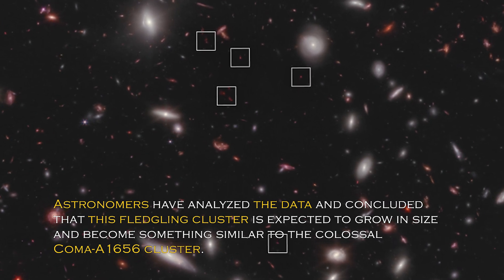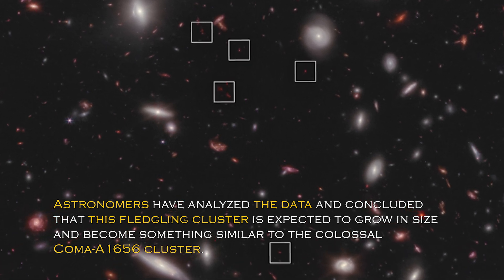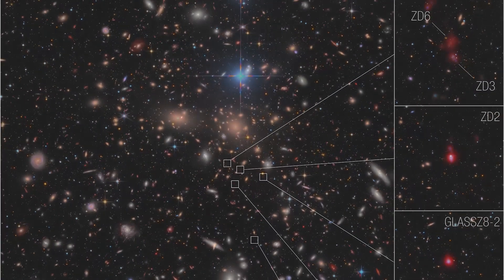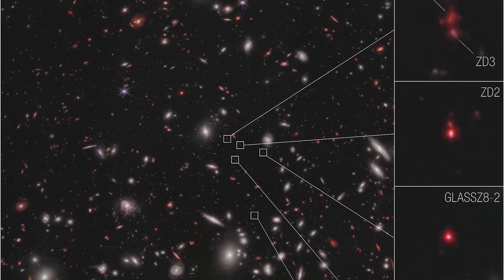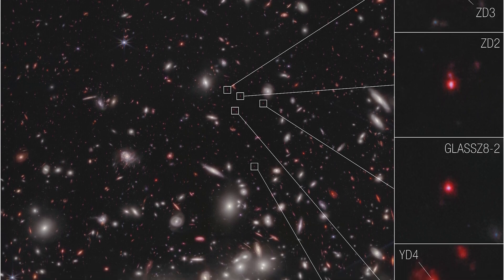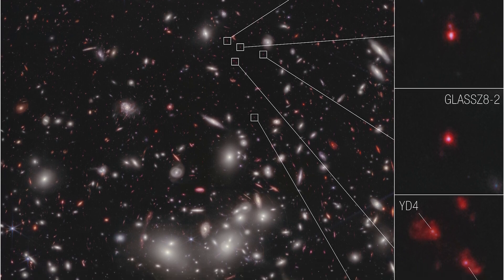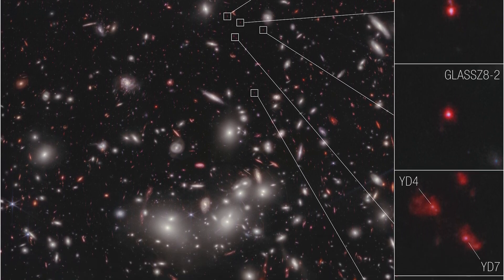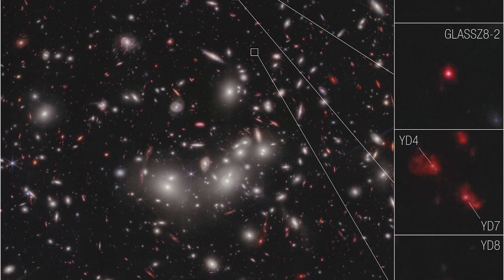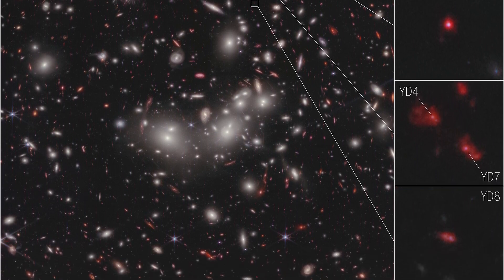Astronomers have analyzed the data and concluded that this fledgling cluster is expected to grow in size and become something similar to the colossal Coma A1656 cluster. The place where all this is taking place is unique and special, as it is in an area of accelerating galactic evolution thanks to the James Webb Space Telescope. Now researchers can measure the velocities of these seven galaxies, which gives them the confidence to confirm that they are bounded together in a protocluster. To put this in perspective, NASA scientists compared these distant galaxies to small drops of water in different rivers that will eventually join together to form a large, powerful river.